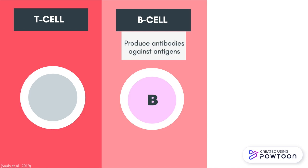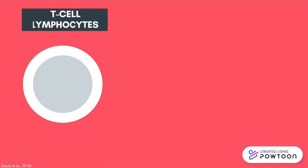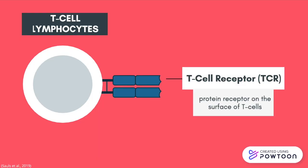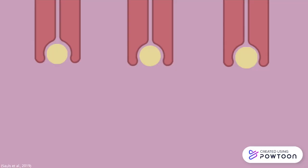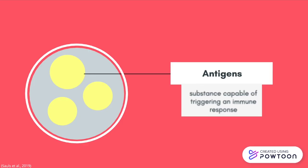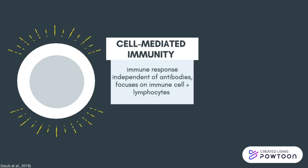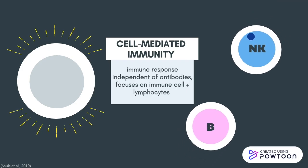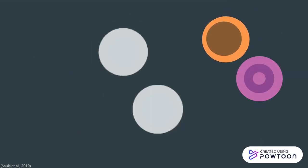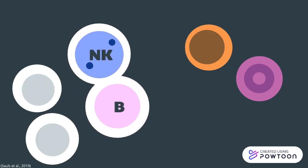T-cells are one of the three main types of lymphocytes; the other types include B-cells and natural killer cells. T-cell lymphocytes have unique proteins called T-cell receptors, or TCRs, on their membrane surface. TCRs recognize many specific antigens — antigens are strangers to our immune system that trigger an immune response. T-cells are necessary for cell-mediated immunity, actively destroying infected cells and signaling other immune cells to participate.